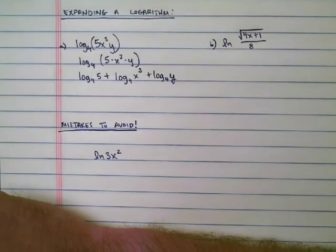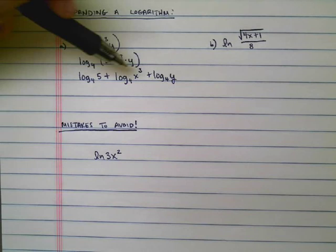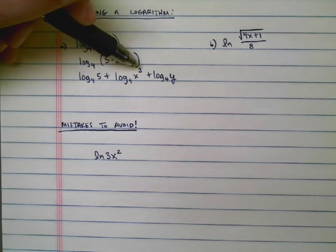And I'm almost done, but I'm not quite to the simplest form yet. You see, I see this x cubed here. And I know that the power property says that I can take this 3 and I can drop it down in front.